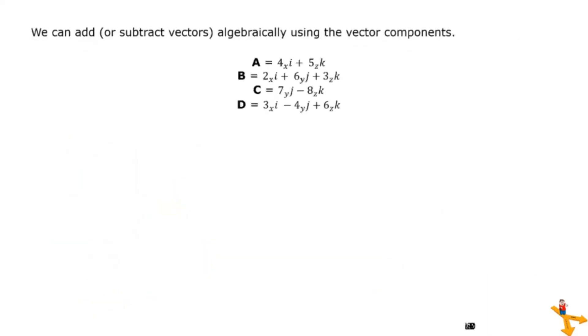We can add or subtract vectors algebraically using the vector components. Using the given vectors, let us try A minus C. A minus C equals 4 sub x i plus 5 sub z k minus 7 sub y j minus 8 sub z k. Reordering the components with the same variables, we arrive at 4 sub x minus 7 sub j plus 13 sub z k.